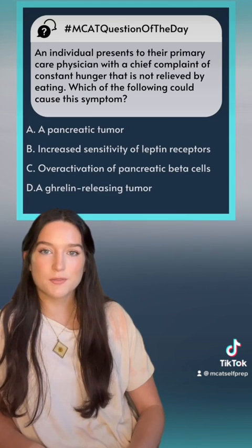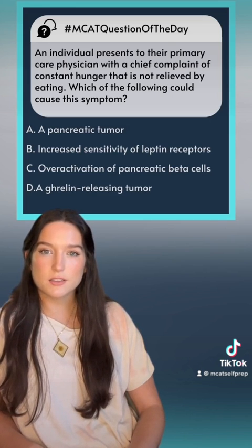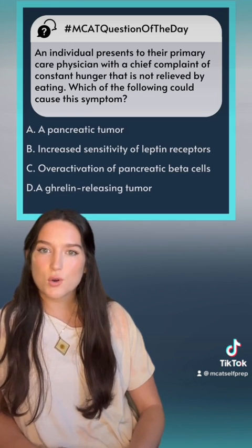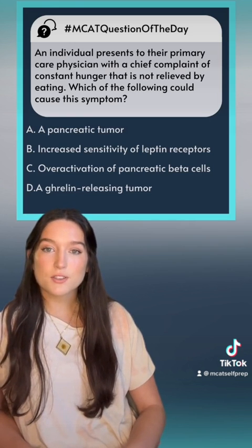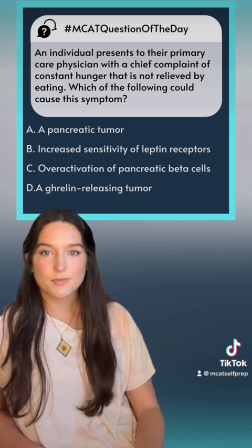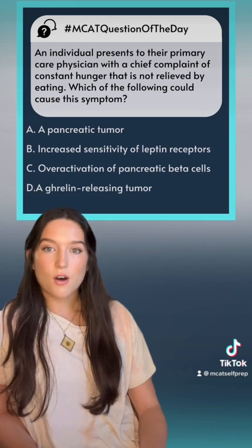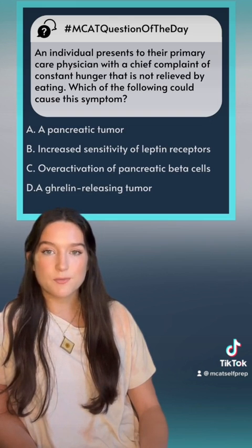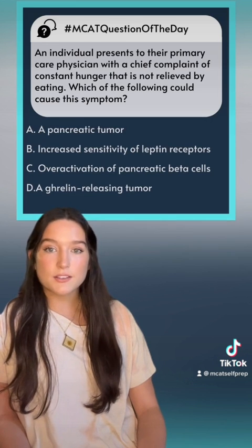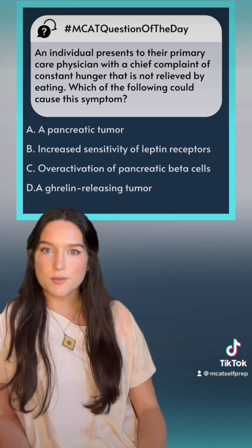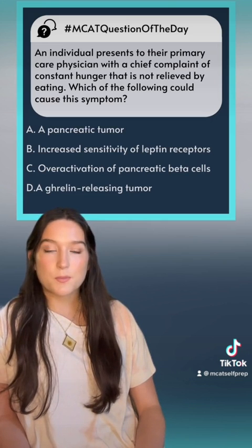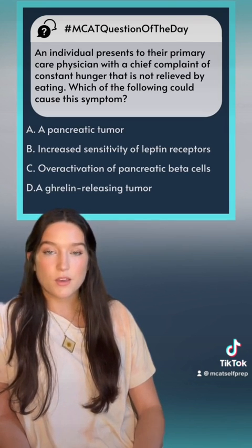Let's look at A: a pancreatic tumor. What cells exist inside of the pancreas? First, we have alpha cells — what do alpha cells secrete? Glucagon. The pancreas also has beta cells, which secrete insulin, and delta cells, which secrete somatostatin. All these cells are part of the pancreas's endocrine function. It also has an exocrine function — inside the exocrine pancreas we have acinar cells. There are so many cells this tumor can affect, but the answer choice doesn't clarify which cells are affected. So we can mark this answer as wrong due to the lack of information.